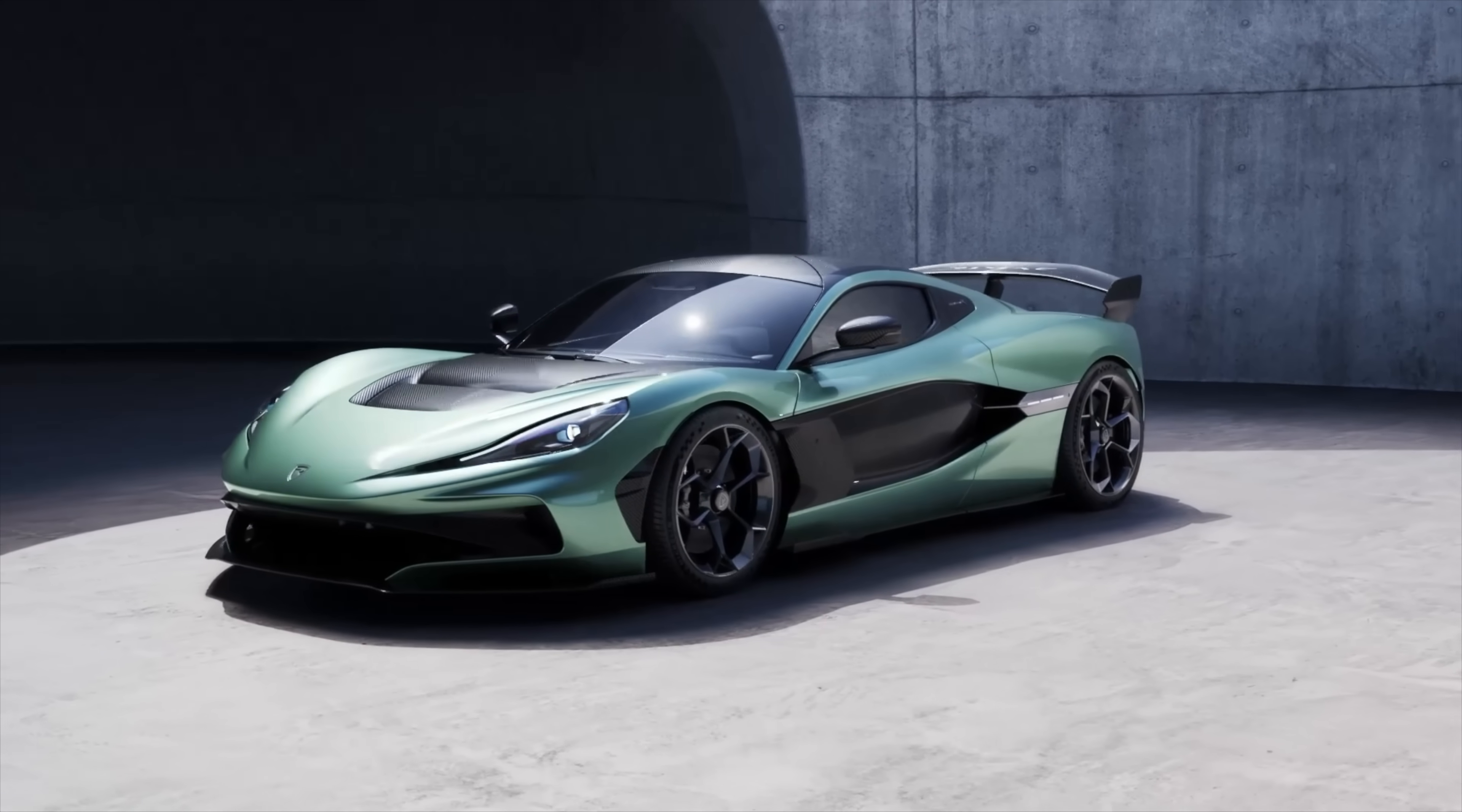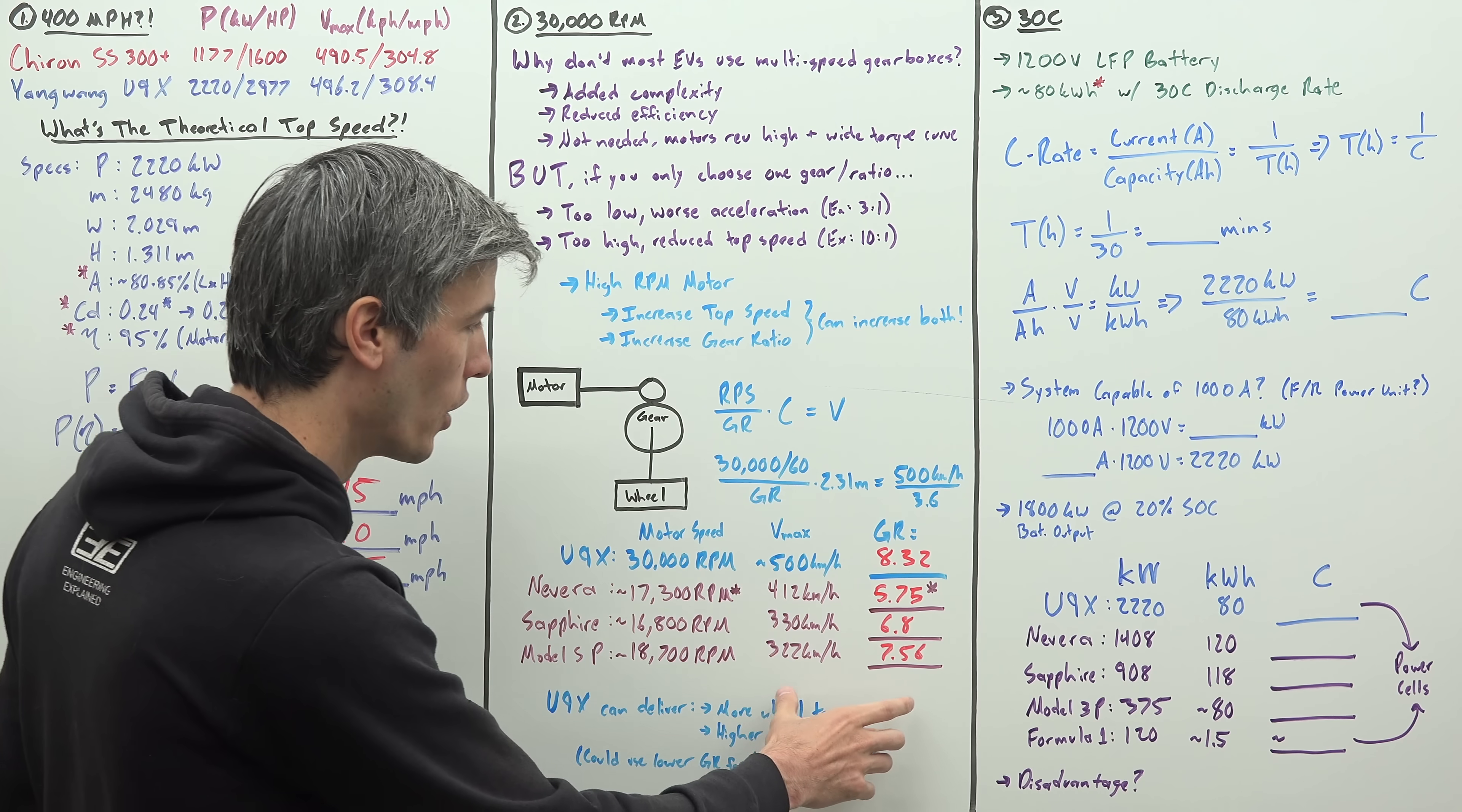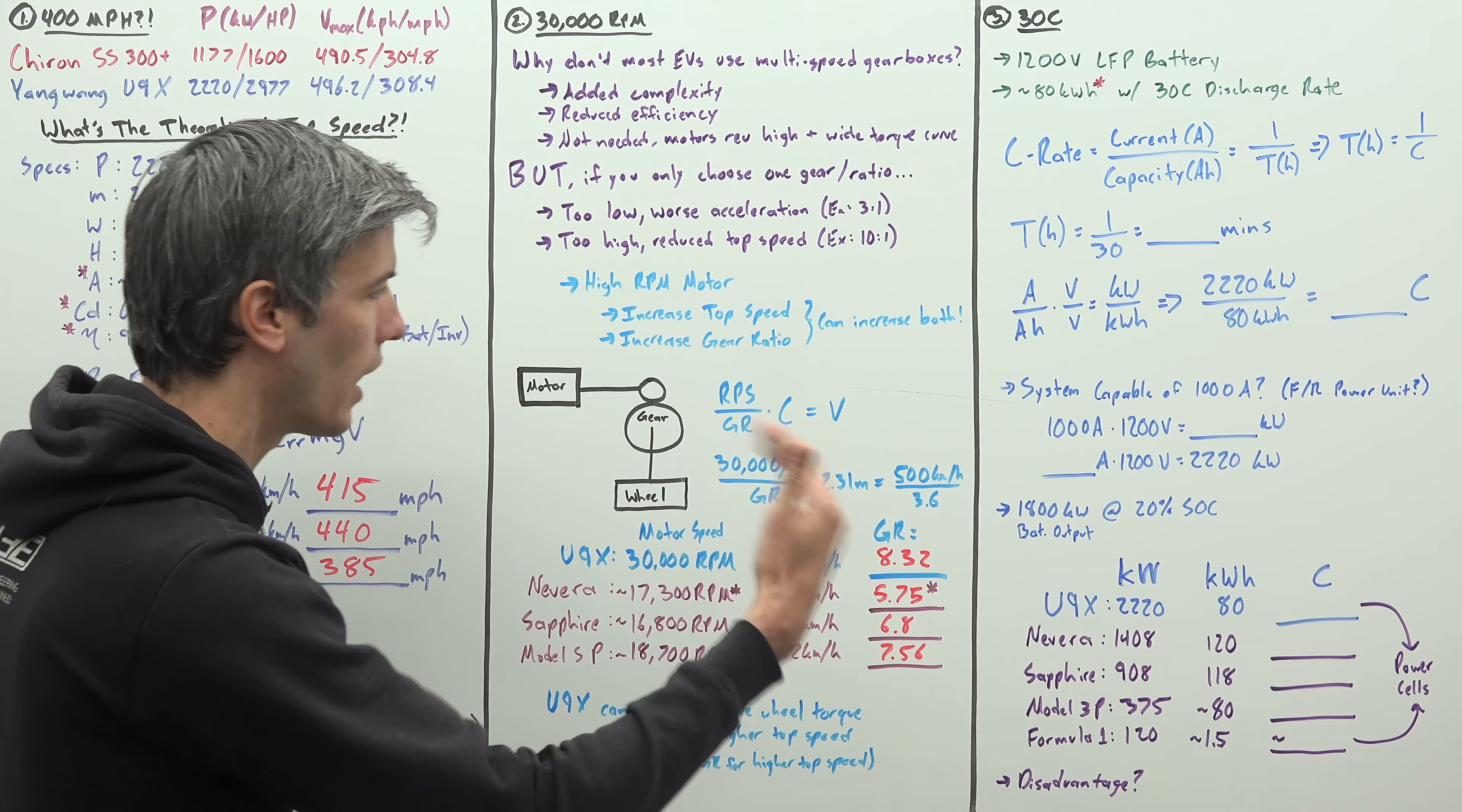But how does this compare to the competition? So if you look at the Rimac Nivera, if you look at the Lucid Air Sapphire, if you look at the Tesla Model S Plaid, all of these are ridiculously fast electric vehicles, but all of them are significantly lower revving electric motors, they have significantly lower top speeds, and they have lower gear ratios. So not only could this vehicle use a more aggressive gear ratio and thus get better wheel torque for a longer period of time, well, it also has a higher top speed. So kind of best of both worlds here, and of course if they wanted to, if they wanted to reach a higher top speed, they could reduce this gear ratio, still have really good acceleration, and reach a higher top speed.